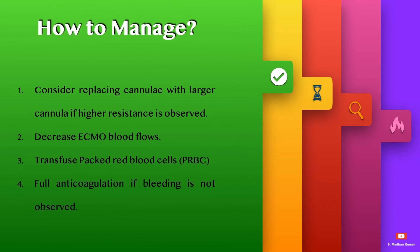To manage hemolysis on ECMO: consider replacing the cannula with a larger cannula if higher resistance is observed; decrease the ECMO blood flow rates; transfuse PRBCs to keep hemoglobin high; and maintain full anticoagulation, addressing bleeding if it is not controlled.